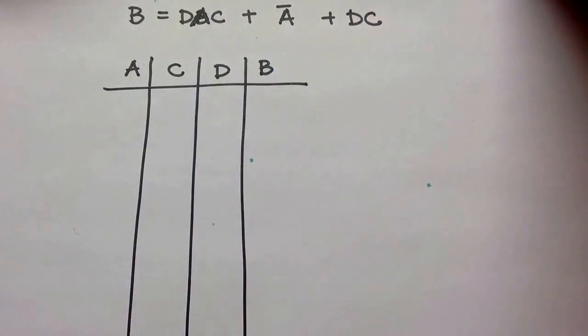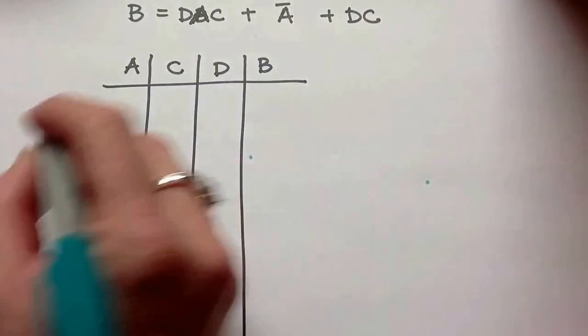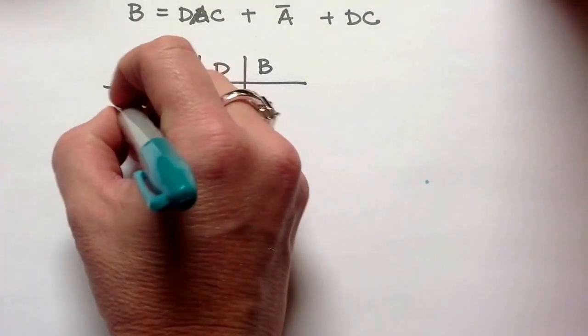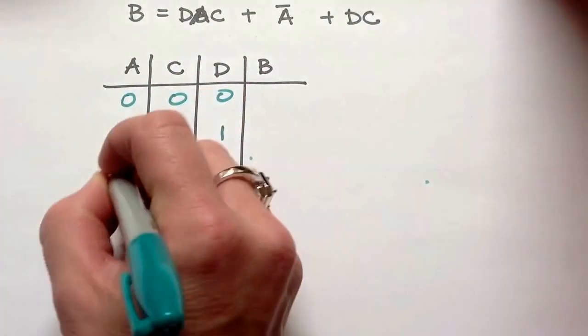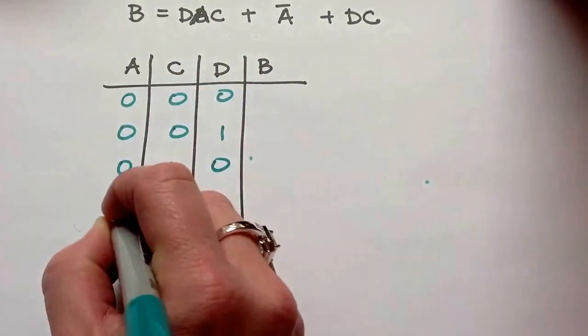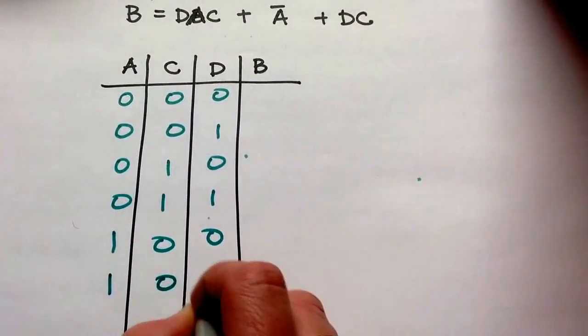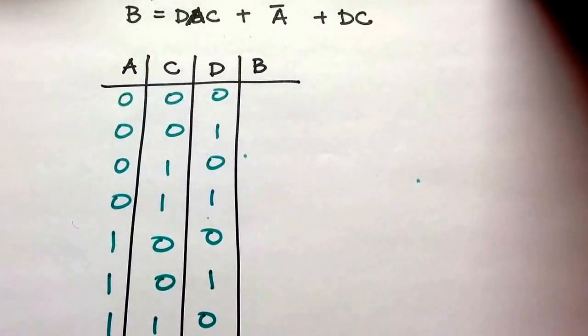I've also labeled the output, and now I'm going to just fill in the inputs counting from 0 to 7 in binary. So 0, 1, 2, 3, 4, 5, 6, 7, right?